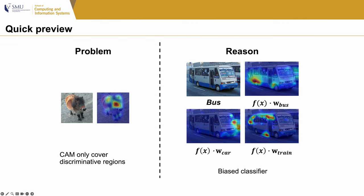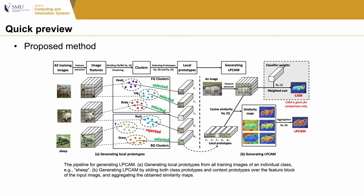First is a quick preview of our paper. The task is weakly supervised semantic segmentation, in which CAM plays a significant role. We work on the poor coverage of foreground objects problem in CAM — for example, CAM only covers discriminative regions like the head or the torso. We find that the reason is that the classifier used to compute the CAM is biased to discriminative features only. We propose a prototype-based method to leverage both discriminative and non-discriminative features to generate Class Activation Maps with better coverage on the complete object.